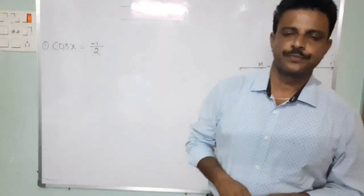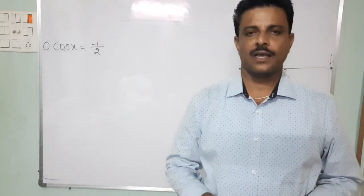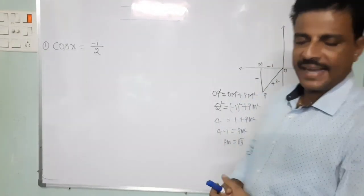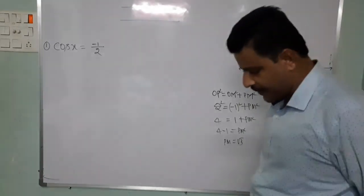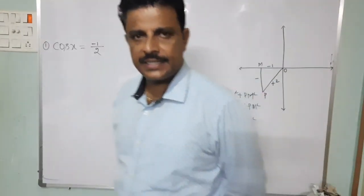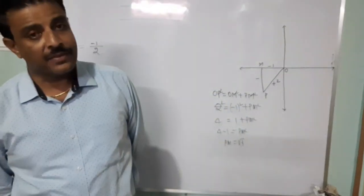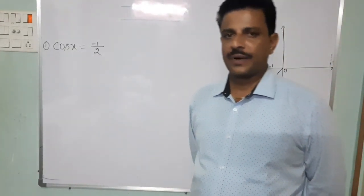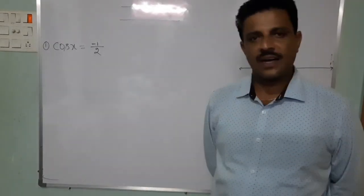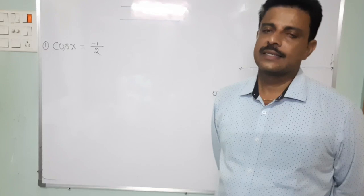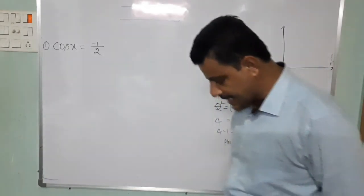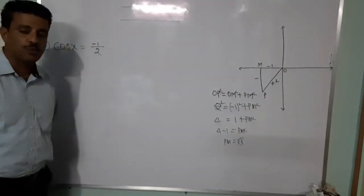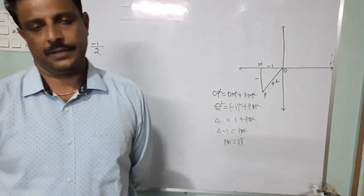Good morning dear students. Yesterday we did a problem where cos x equals minus 1 by 2. Here the question gives cos x equals minus 1 by 2, and we need to find the other trigonometric ratios. We know there are 6 trigonometric ratios — given cos x, find the other 5. The condition is that cos x equals minus 1 by 2 lies in the third quadrant.